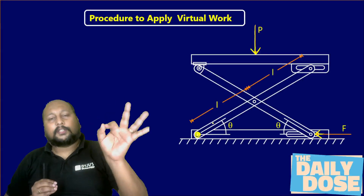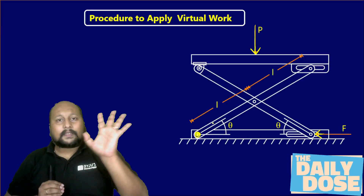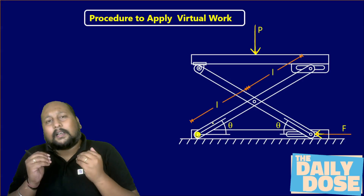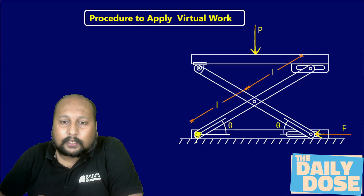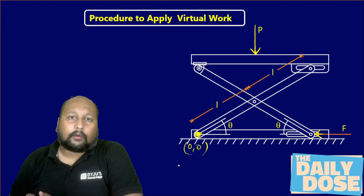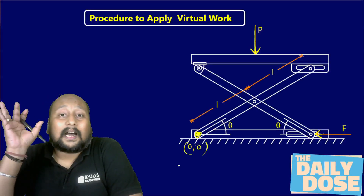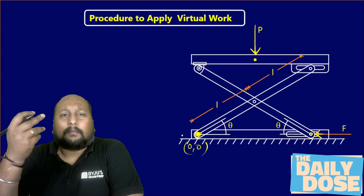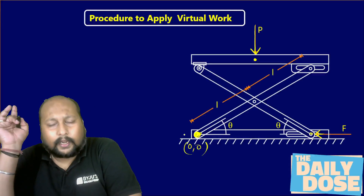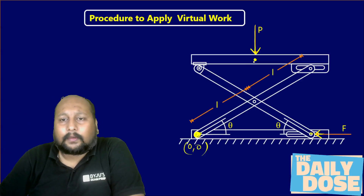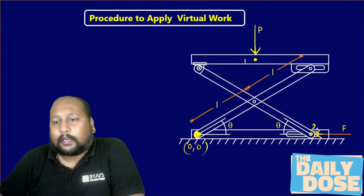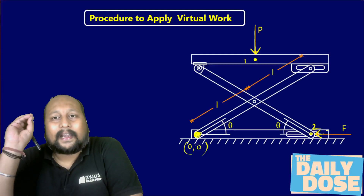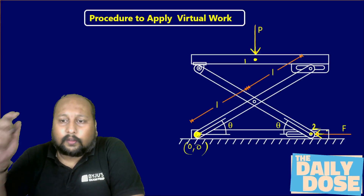Procedure to apply Virtual Work: Step one — identify the origin. Always take a fixed point as the origin. Here the fixed point is the hinge. Step two — identify where the forces are acting. Forces are acting at point 1 and point 2. At the hinge point there are reactions, but since the hinge is fixed, it won't move, so reactions there do no virtual work. Label the force application points as point 1 and point 2.